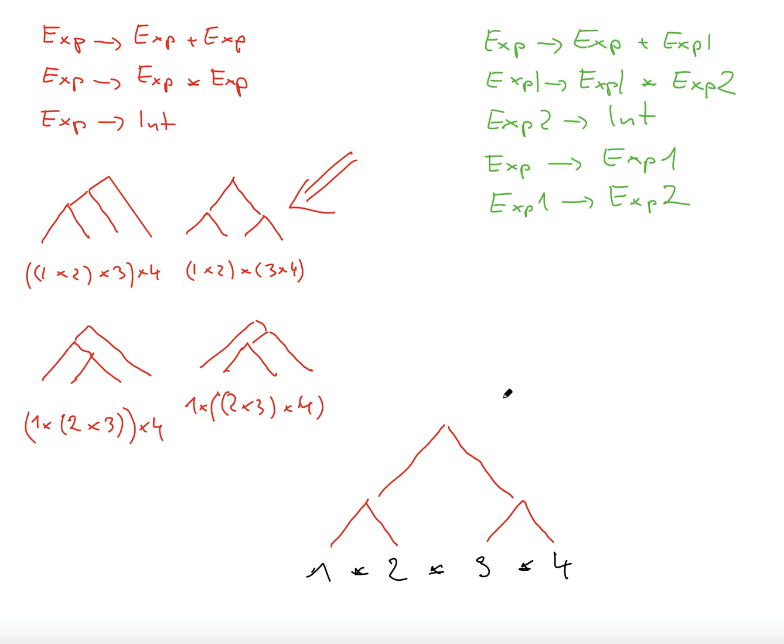And again, I have two possible choices. I can do 1 times 2, and then multiply the result with what I get from 3 times 4. But we see here, but we see here that this is a tree that we already have here.